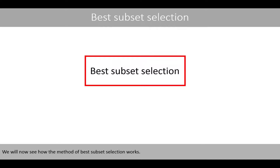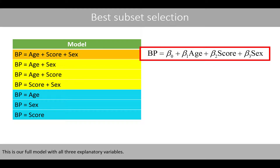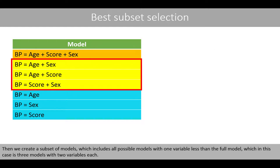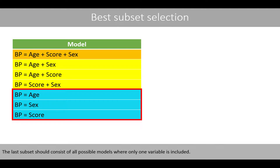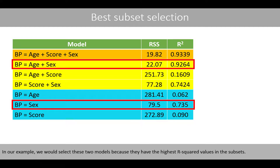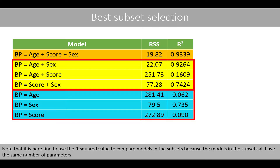We'll now see how the method of best subset selection works. This is our full model with all three explanatory variables. For simplicity, we illustrate this model like this. We then create a subset of models, which includes all possible models with one variable less than the full model, which in this case is three models with two variables each. The last subset should consist of all possible models where only one variable is included. We then choose the best model in the subsets based on the residual sum of squares or the R-squared value. Both measures will select the same model. In our example, we will select these two models because they have the highest R-squared values in the subsets. Note that it is fine to use the R-squared value to compare models in the subsets because the models in the subsets all have the same number of parameters.